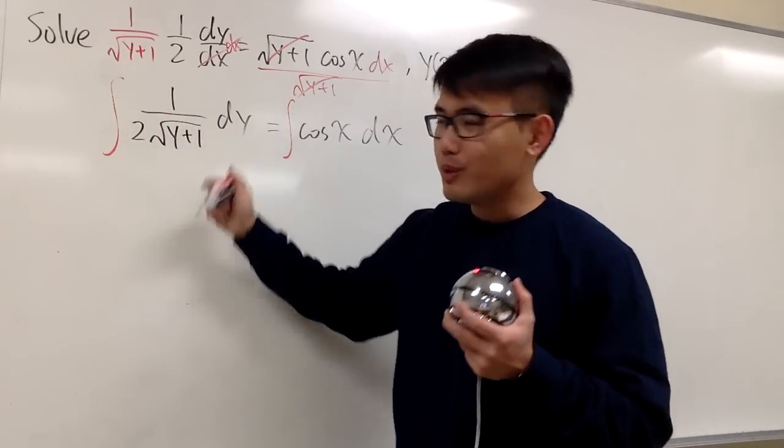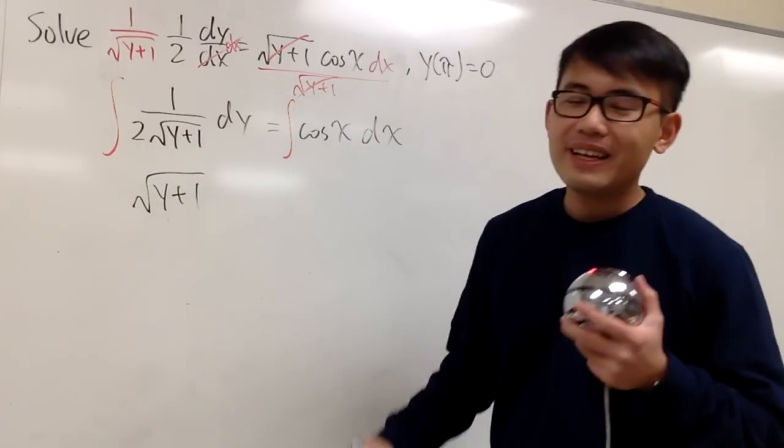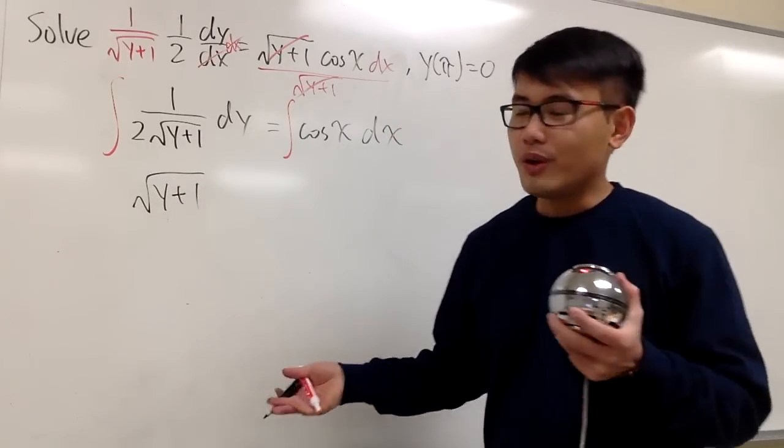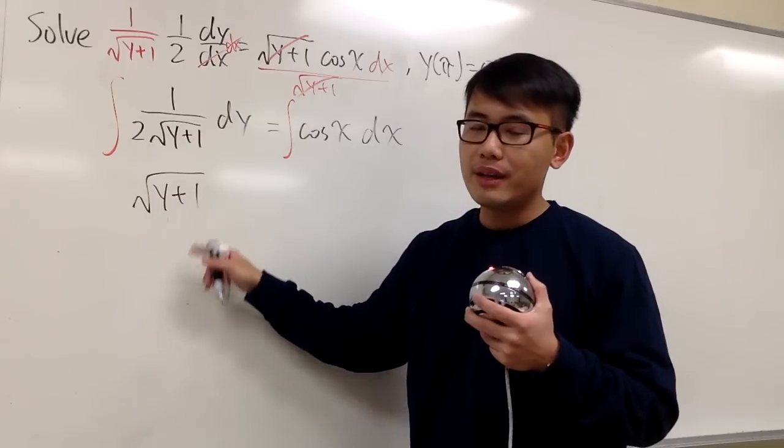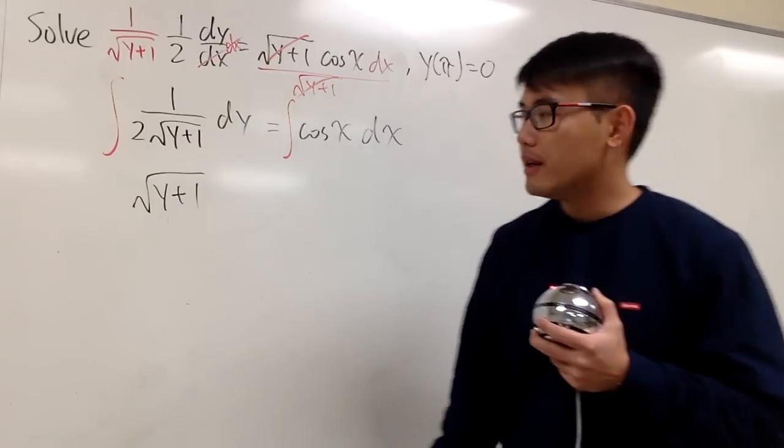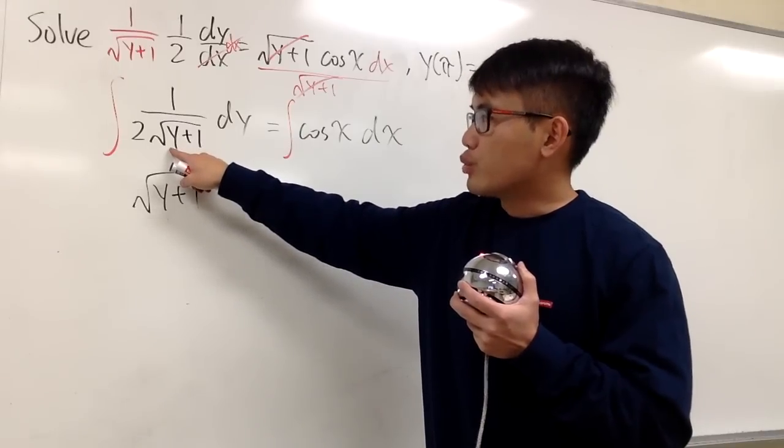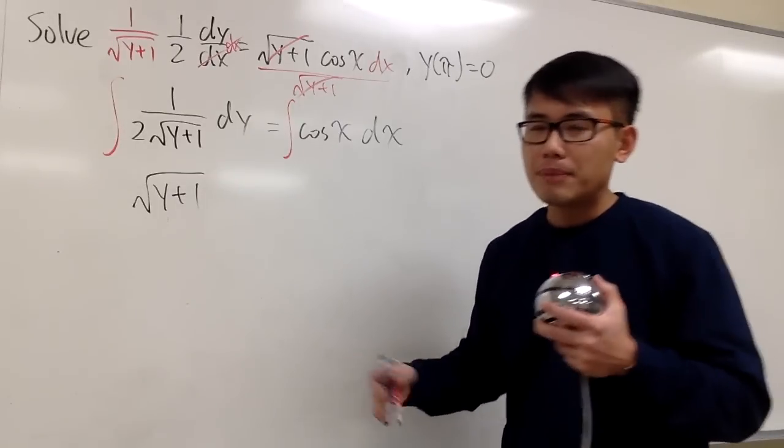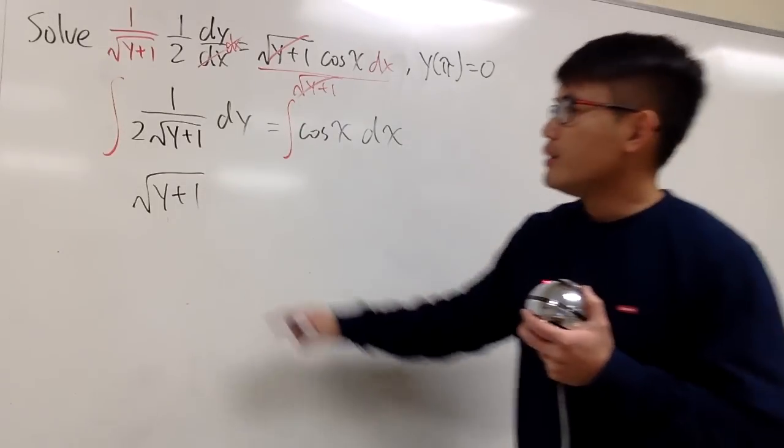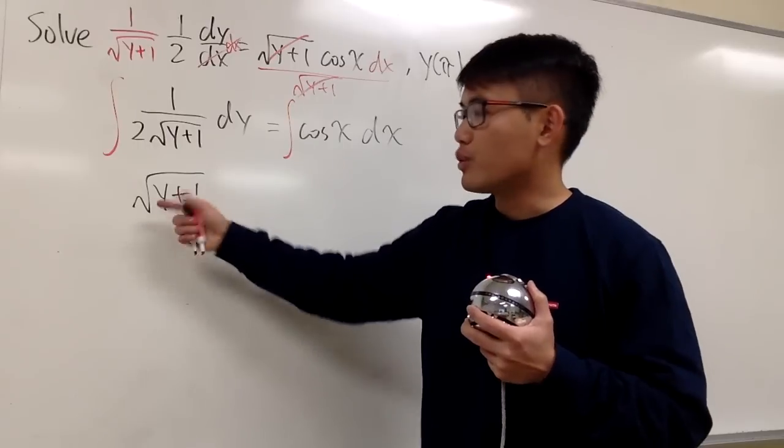What's the integral of 1 over 2 square root of y plus 1? This right here is just going to be square root of y plus 1. Because a few ways you can do it, of course, you can use u substitution, that u is equal to y plus 1. And go to the usual step, right? But I would suggest you guys to do it this way.